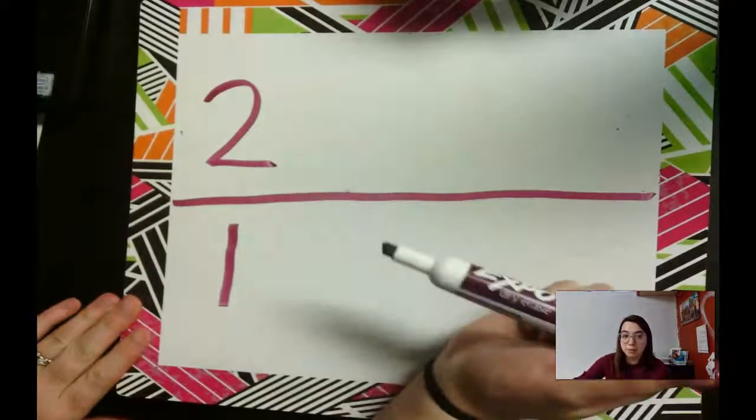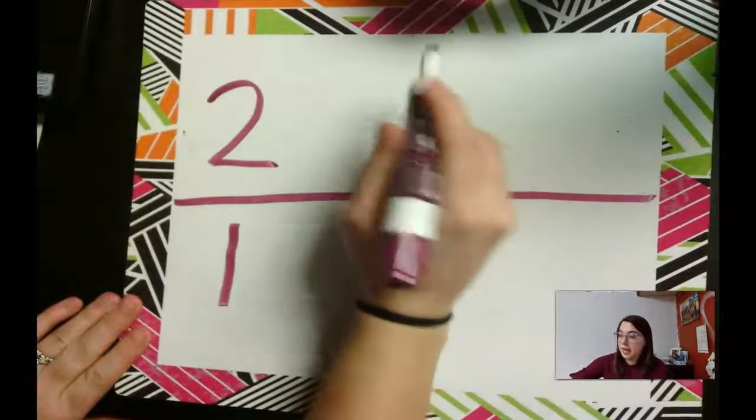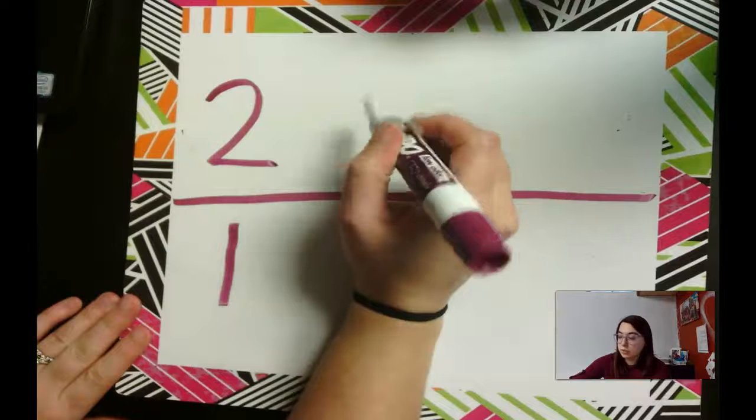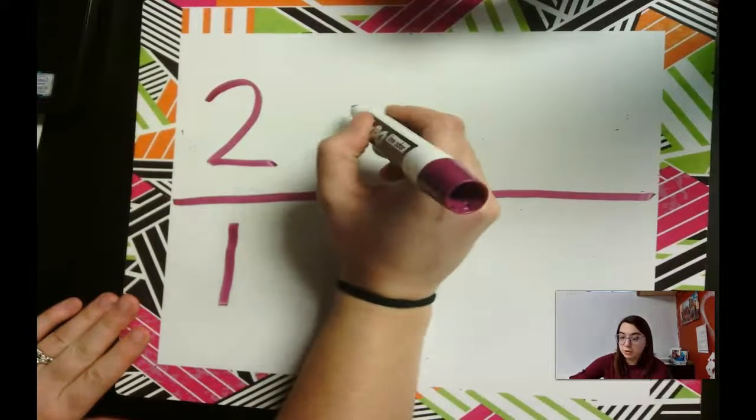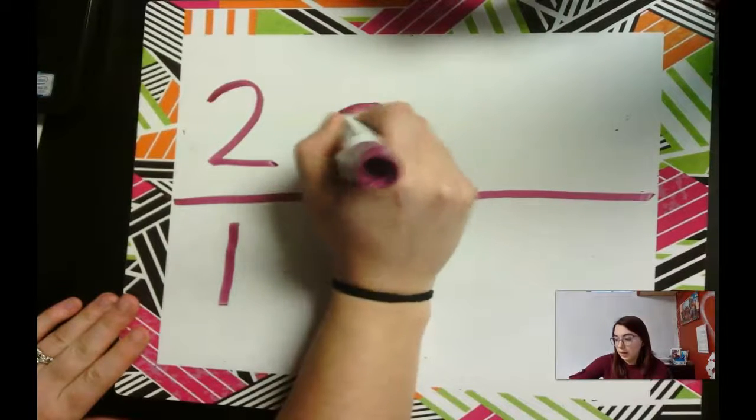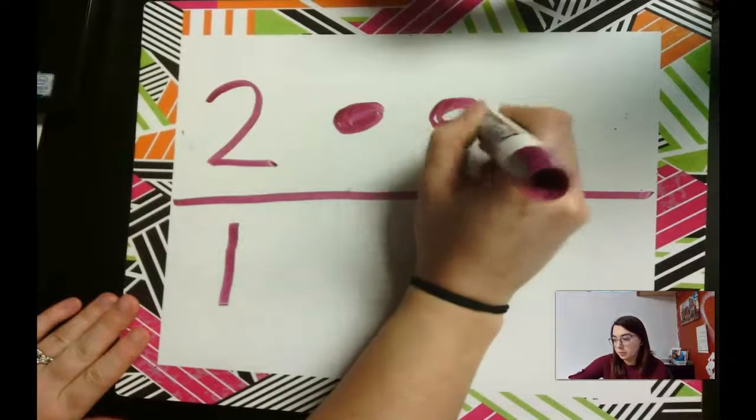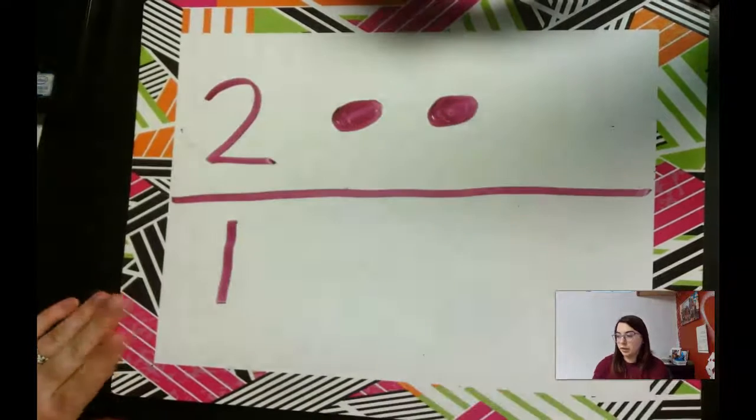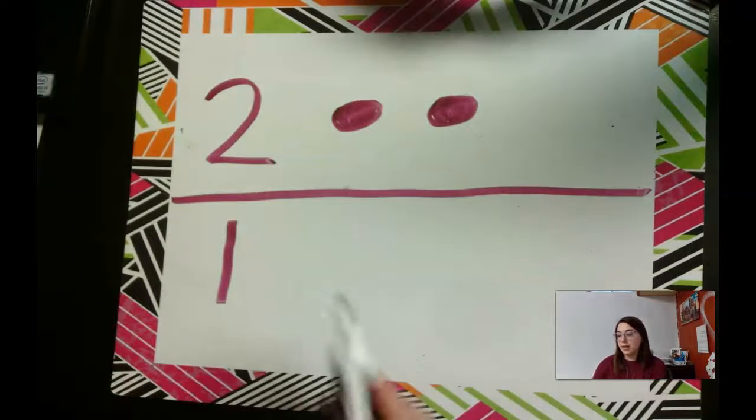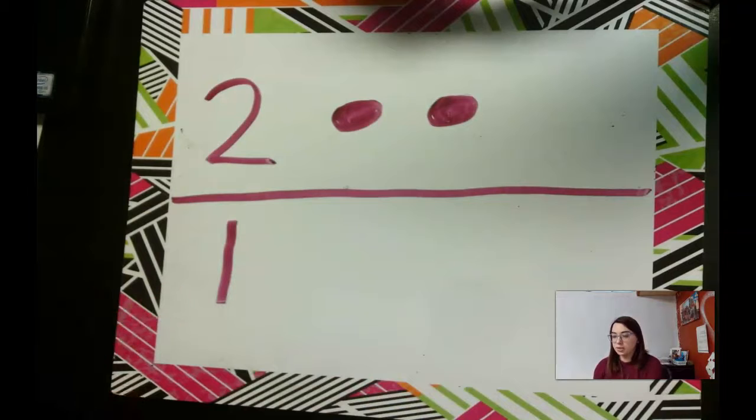So here we have the number two. And we're going to count and write to show two. We'll do two circles. One, two, all right, and then we're going to count and write to show this number. What number is that? One.